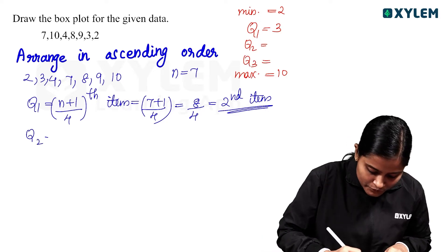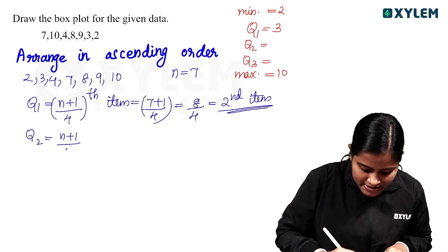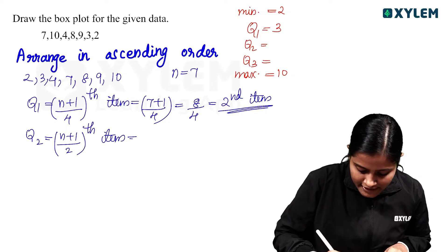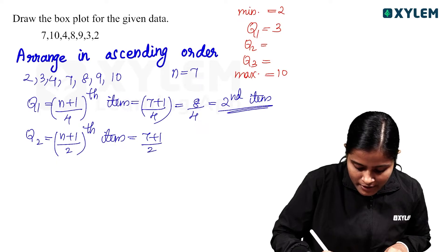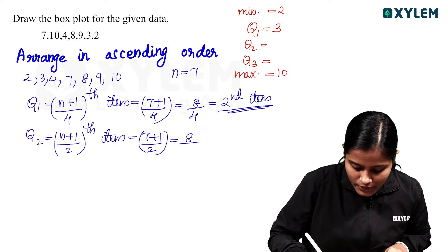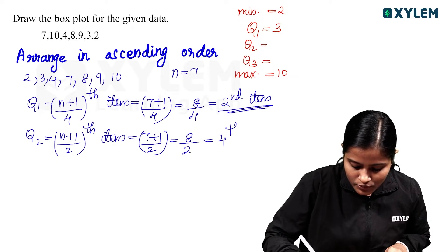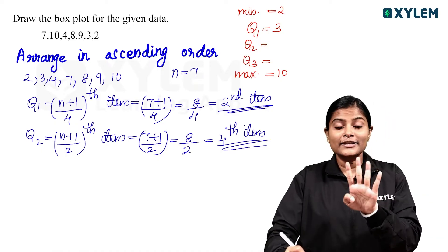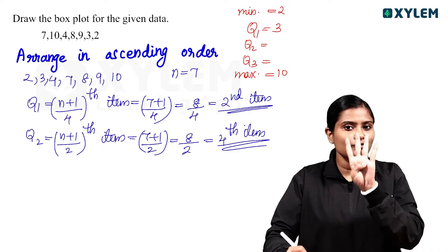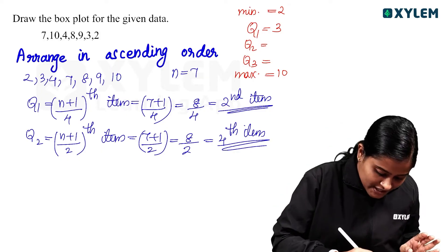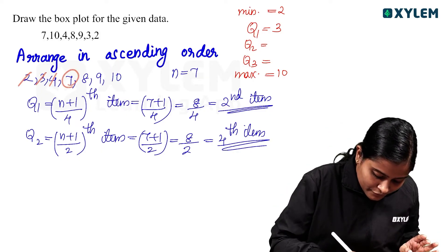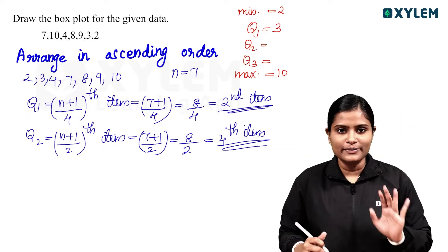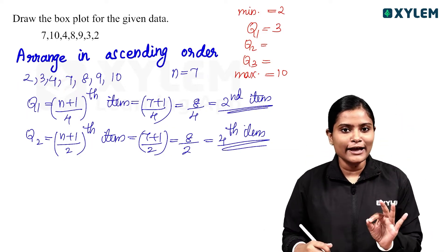The formula for median is the (n+1)/2 th item. That is equal to (7+1)/2, which equals 8/2, which equals the 4th item. The 4th item is equal to the median value. Counting to the 4th position: 1, 2, 3, 4 — so Q2, the median value, is 7.